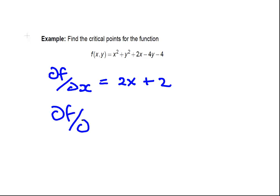The partial derivative with respect to y: x², derivative of that with respect to y is just 0; y², we have 2y; 2x, never mind that; minus 4y, that's minus 4; and the minus 4, derivative of that with respect to y is just 0 since it's constant. So ∂f/∂y = 2y - 4.